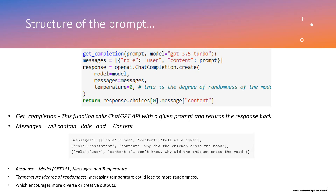The response uses openai.ChatCompletion.create, which takes the model and messages as inputs. Temperature is another parameter to understand. Temperature is about the degree of randomness — increasing it leads to more diverse or creative output. The higher the value you feed in for temperature, the more diverse the answer could be. We will talk more about this and go further with coding and examples.